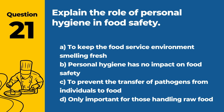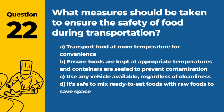Question 21. Explain the role of personal hygiene in food safety. The answer is C: To prevent the transfer of pathogens from individuals to food. Good personal hygiene practices are essential in minimizing the risk of foodborne illnesses.